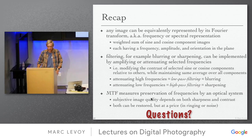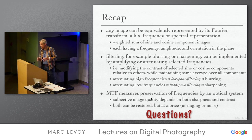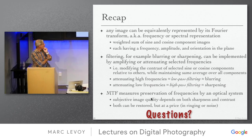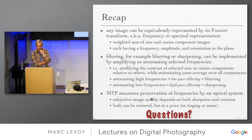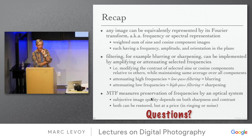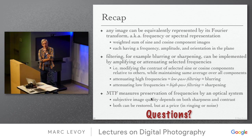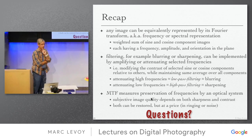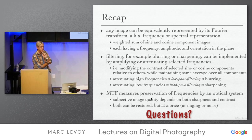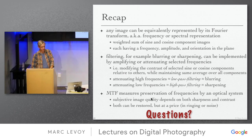MTF curves are typically shown for specific wavelengths or pairs of orthogonal directions. When you see an actual lens MTF curve, there will be three different colors shown and a pair of curves for each — the sagittal and tangential directions — at frequencies like 5, 10, and 20 lines per millimeter.